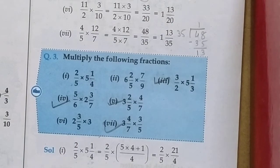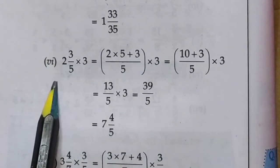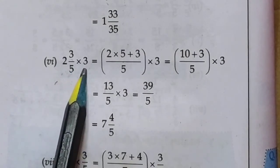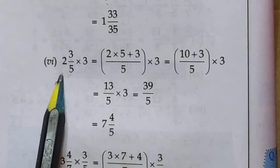Now we are going to solve 6th: 2 whole 3 upon 5 multiply 3. First of all, mixed fraction, convert it into improper fraction.